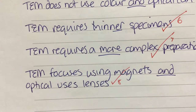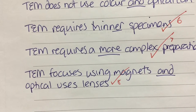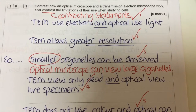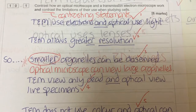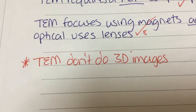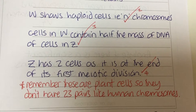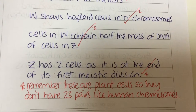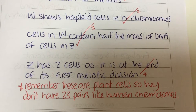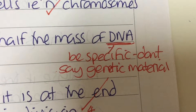So it's fairly straightforward as long as we write contrasting statements or use contrasting words like 'greater', 'thinner', 'more', and so on. My top tip for this question is to remember that with an optical microscope you can view organelles — just large ones like the nucleus. The transmission electron microscope enables us to view smaller organelles like the mitochondria. Also remember that the TEM doesn't do 3D images — that's the scanning electron microscope.